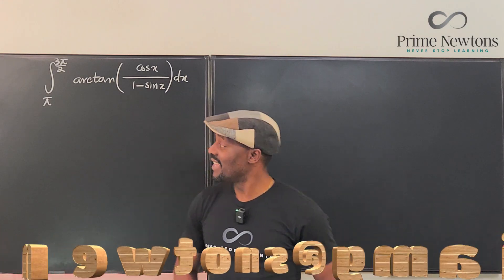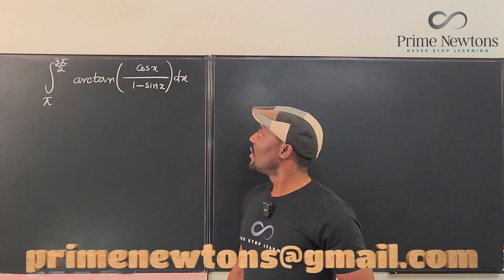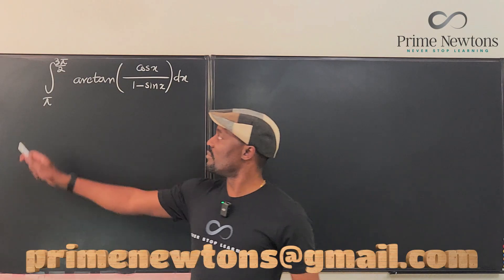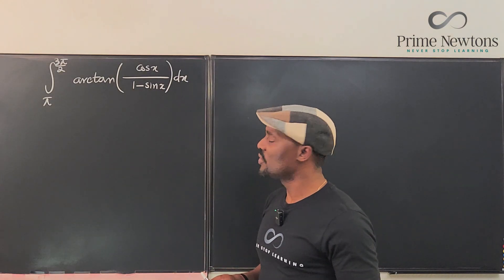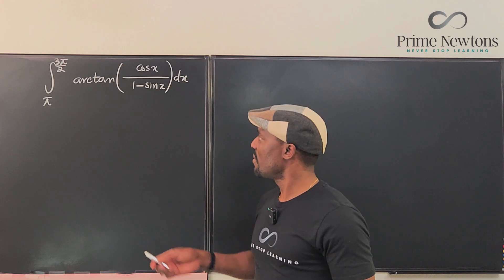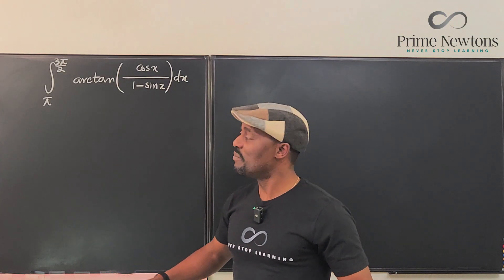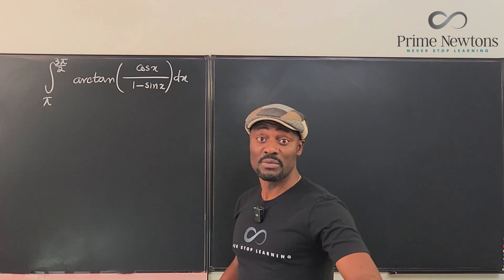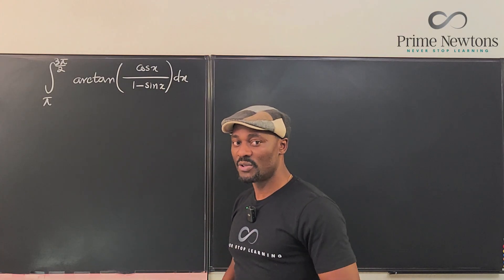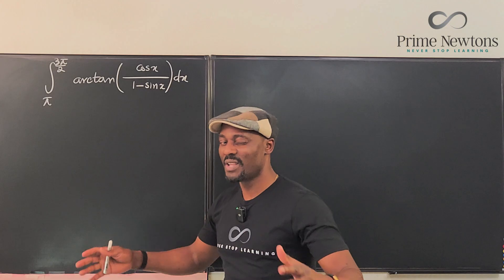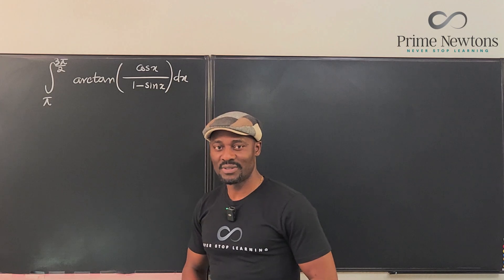Welcome to another video. Let's take this integral of arctan of cosine x over 1 minus sine x, from pi to 3 pi over 2. You might wonder that a u-substitution would be a good thing to do here, but this is arctan. What I decided to do straight off was to use integration by parts since it's easy to differentiate arctan. It worked out through a series of trig substitutions and simplifications.